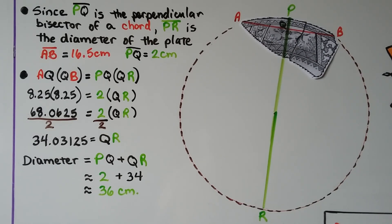So remember, the chord-chord product theorem says that the chords have to intersect in the interior of the circle, and the products of the lengths of the segments of the chords are equal.